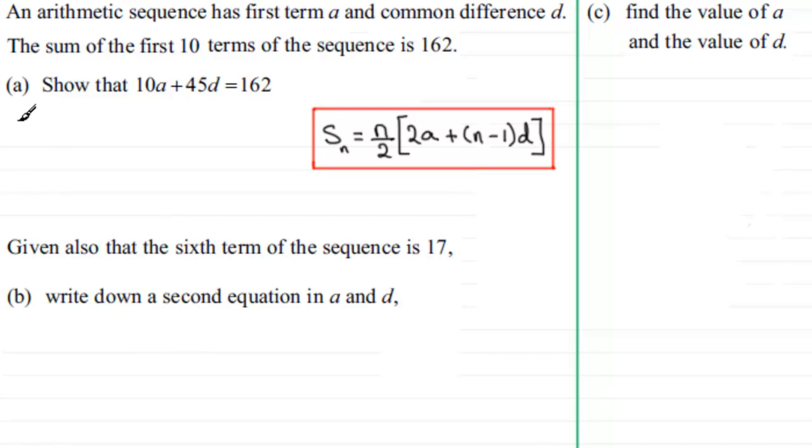So if we're to answer this question, we're given that the sum of the first 10 terms S10 equals 162. So where does this take us? Well, therefore, we would have N over 2, 10 over 2 in this example.